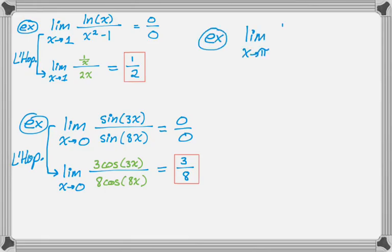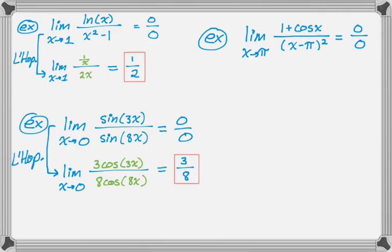The next example is the limit as x approaches π of (1 + cos(x)) over (x − π)². Direct substitution: cos(π) is −1, so I get 1 − 1 which is 0, and π − π is 0. So I get 0 over 0, and I'm going to use L'Hôpital's Rule.